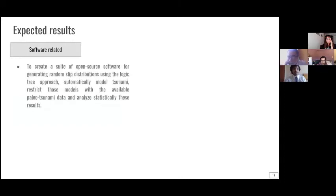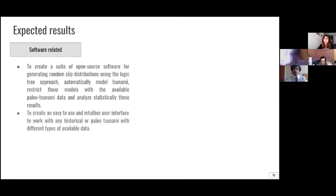Now the expected results and progress made. The expected results can be divided into two sections. First, there are software related expected results. We will strive to create a suite of open source software for generating these random slip distributions using Python to automatically model tsunami to restrict these models, both slip models, deformation models, and tsunami models, with the available paleo tsunami data, and to analyze statistically these results. And then, we will strive to create an easy to use and intuitive user interface to work with and to use this software with any historical or paleo tsunami data with different types of available data. So this software, as I mentioned, is super flexible and accepts a lot of user input.